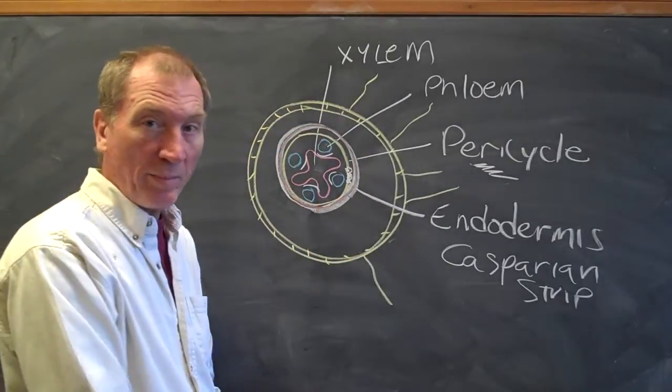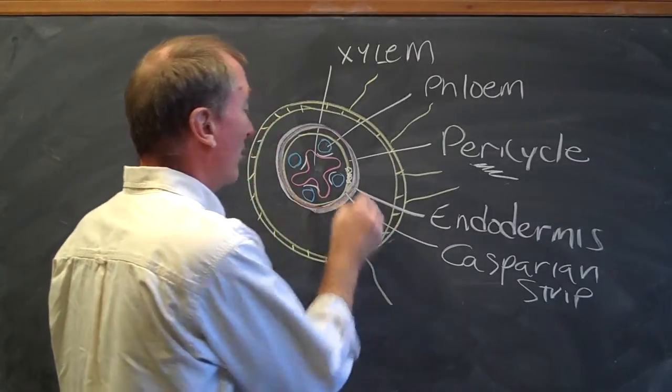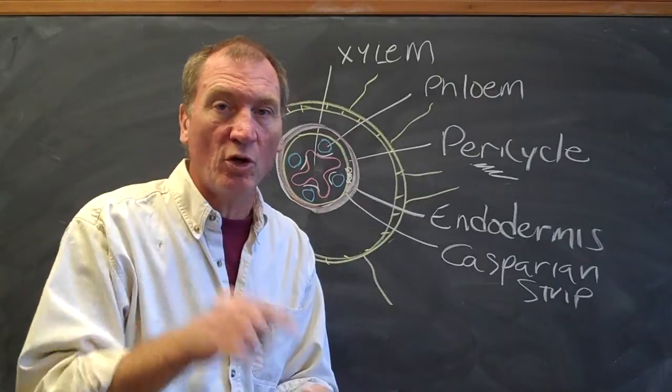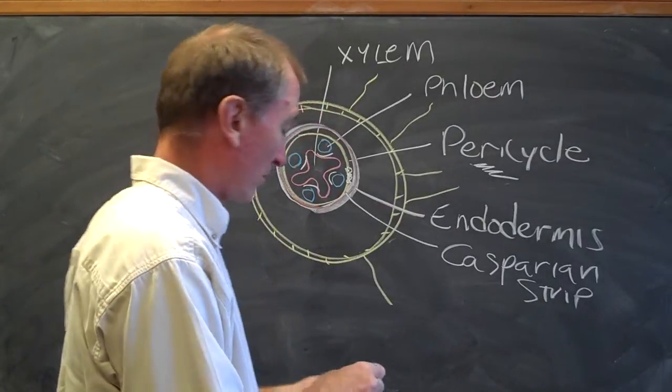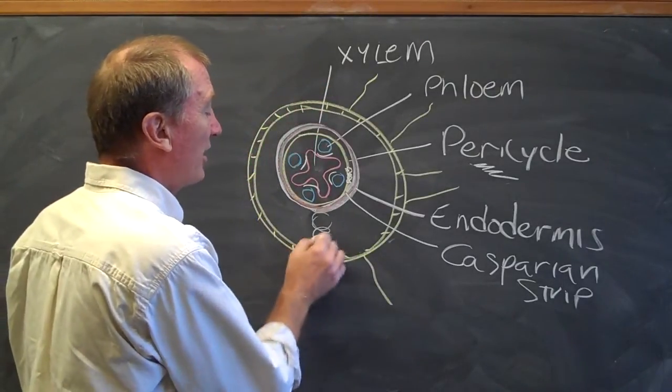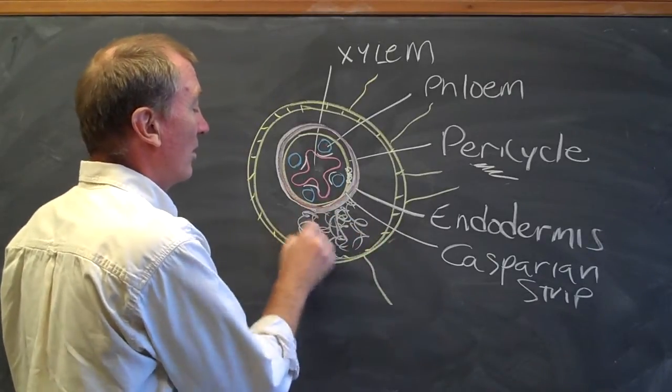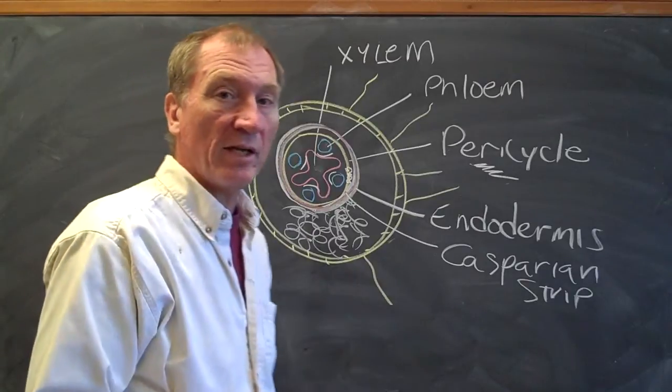Which looks a little bit pink in this diagram. But again, it's suberin around each cell that waterproofs it, so water has to go through the cell. The rest of these cells here are typically parenchyma cells and are cortex cells.